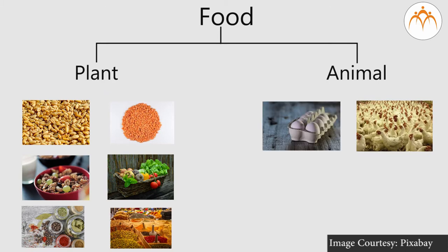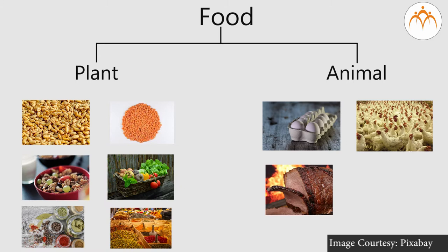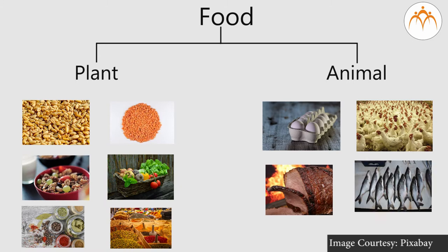Whereas eggs, poultry, meats, fishes, milk are obtained from animal sources. Very good. Now, you know that these other animals and plants are also living organisms and so they too require food.